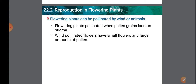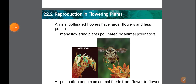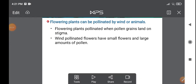Wind-pollinated flowers have small flowers and a large amount of pollen. There are two types of pollination: self-pollination and cross-pollination. When pollen grains are transferred within the same flower or between flowers of the same plant, it is called autogamy or self-pollination.